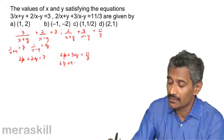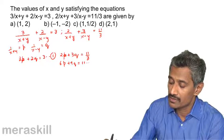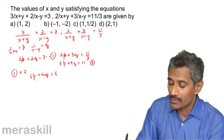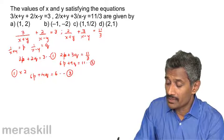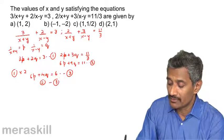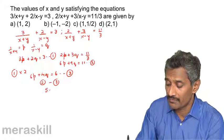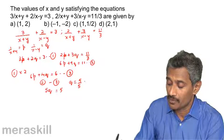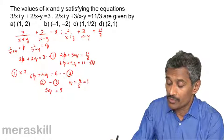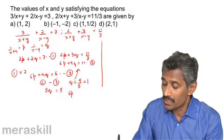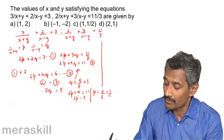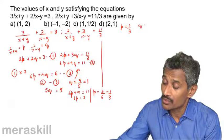Cross-multiplying equation 2 gives 6p plus 9q equals 11. Multiply equation 1 by 2: 6p plus 4q equals 6, call this equation 3. Subtract equation 3 from the cross-multiplied equation 2: 9q minus 4q is 5q, and 11 minus 6 is 5, so q equals 1. Substituting q equals 1 back: 6p plus 9 equals 11, so 6p equals 2, giving p equals 1 by 3.